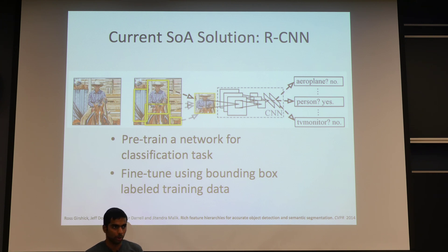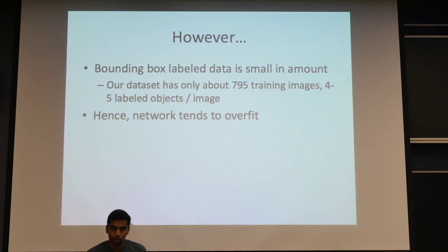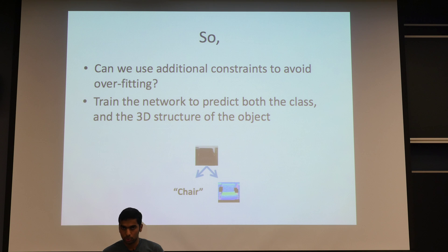However, there's a problem. Bounding box labeled data is usually very small in amount. For example, for the dataset we're considering we just have 795 training images with four to five labeled objects in every image. In such a scenario, it's very easy for the network to overfit. So what we tried to explore through this project was can we use additional constraints to avoid the network from overfitting.